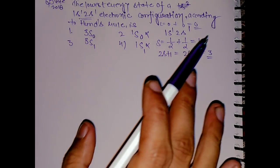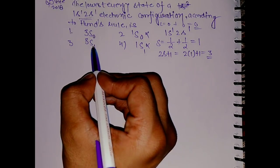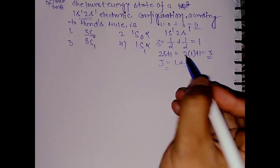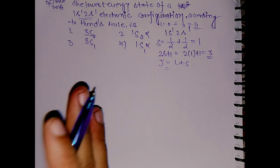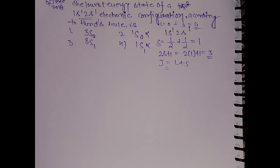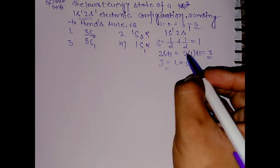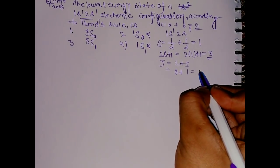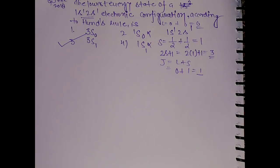Now we are left with the j value. J value will be L+s or L-s, depending on the half-filled or less than half-filled model. The L value is 0 plus s value is 1, so it is 1. We have 1 here, so ³s₁ is the correct answer.